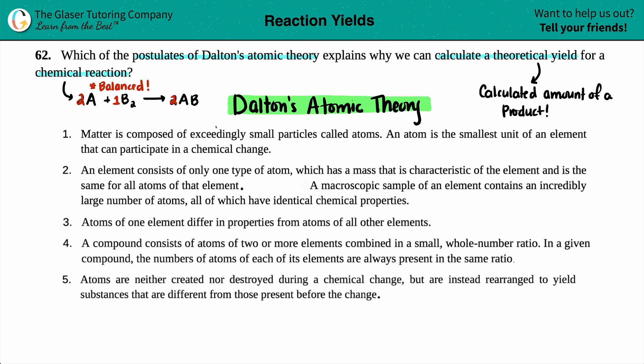Number one: matter is composed of exceedingly small particles called atoms. An atom is the smallest unit of an element that can participate in a chemical change. This one doesn't really state anything about making a product and how the equation has to be balanced. This is just saying that atoms are small. This is out.